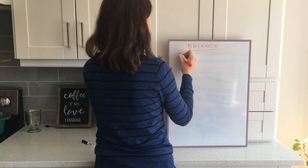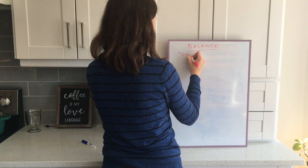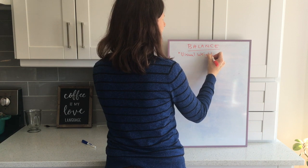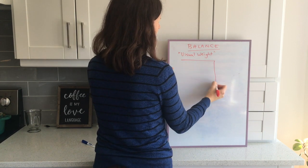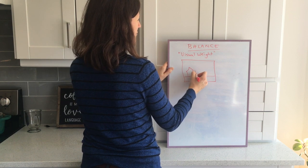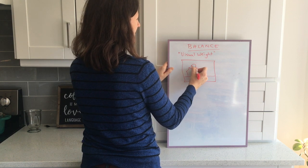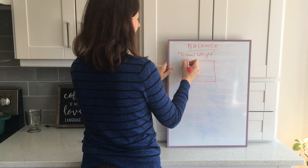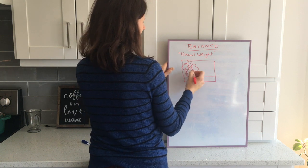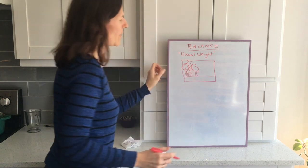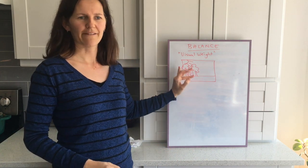Number one is called balance. Balance is simply visual weight. For example, if I take a picture and I put a house on one side, and a tree on one side, and another tree on one side, and I put the sun here, and some other details, all the visual weight is on one half of the painting, and it's not balanced.